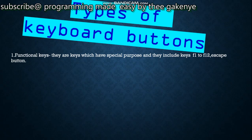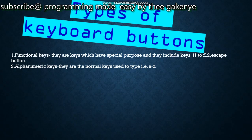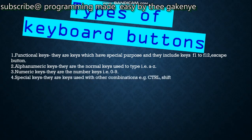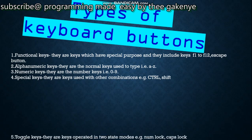F5, for example, is used to refresh — that is its work as a functional key. Number two is the alphanumeric keys — the normal keys used for typing, that is A to Z. Number three is the numeric keys — the number keys from zero to nine. Number four is the special keys, used in combinations; for example, Ctrl+S is to save. To use a special key you have to combine it with other keys — for example, to type a hash you press Shift and the number 3.